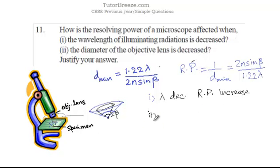The second part of the question is if the diameter of the objective lens is decreased. If the diameter of the lens is decreased, if it is made smaller, then beta will decrease. So sin beta will also decrease, which means the resolving power will decrease.